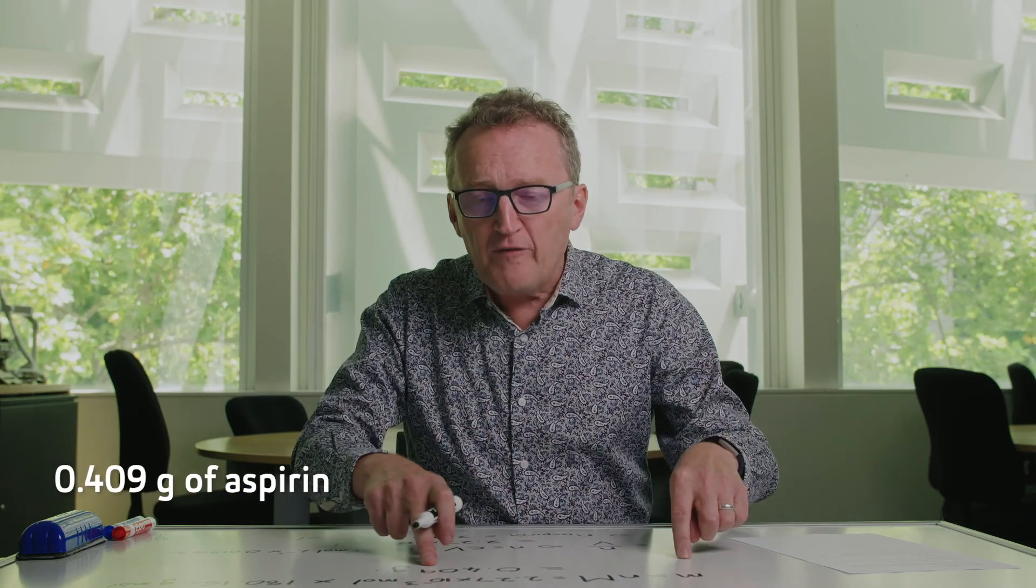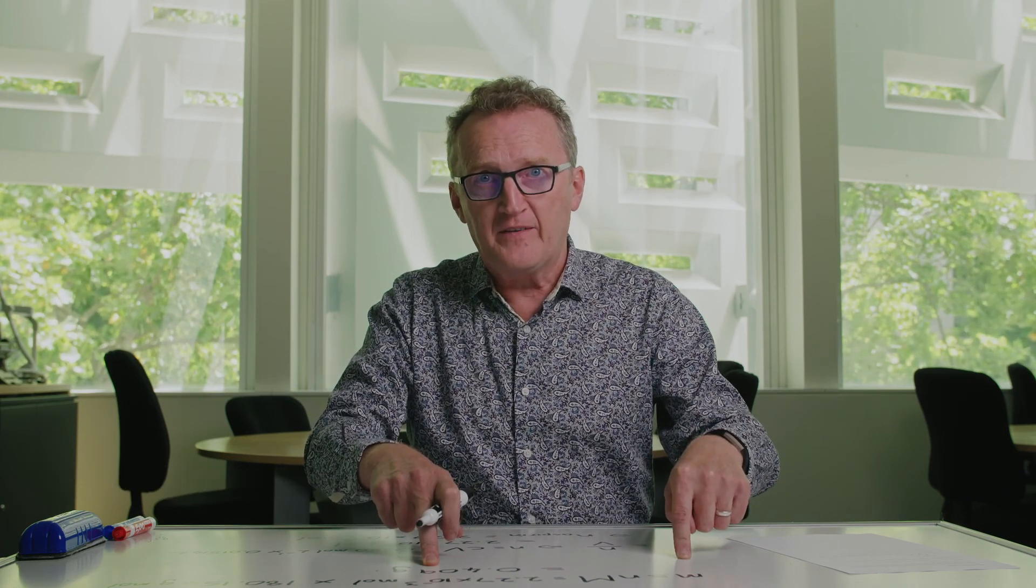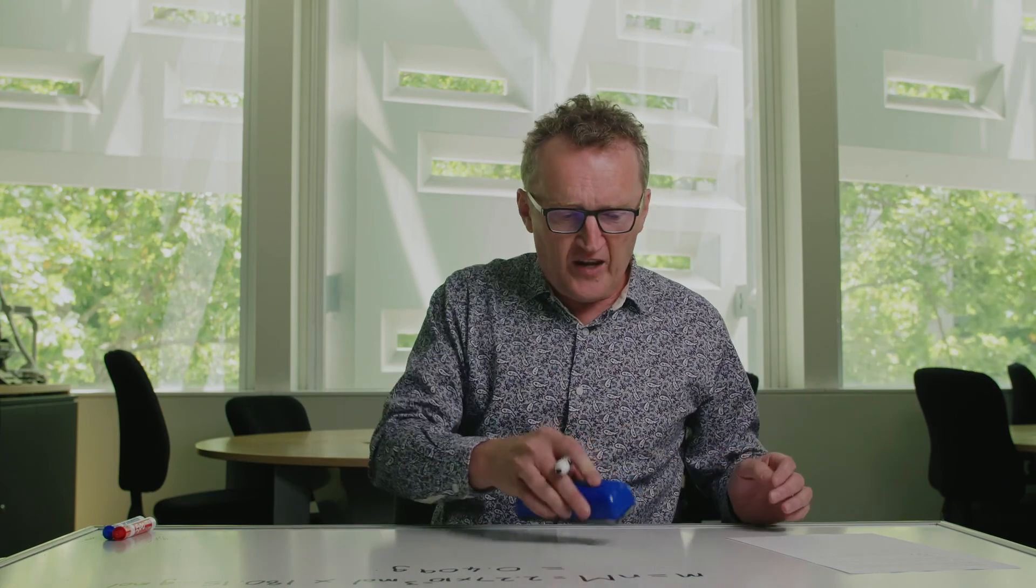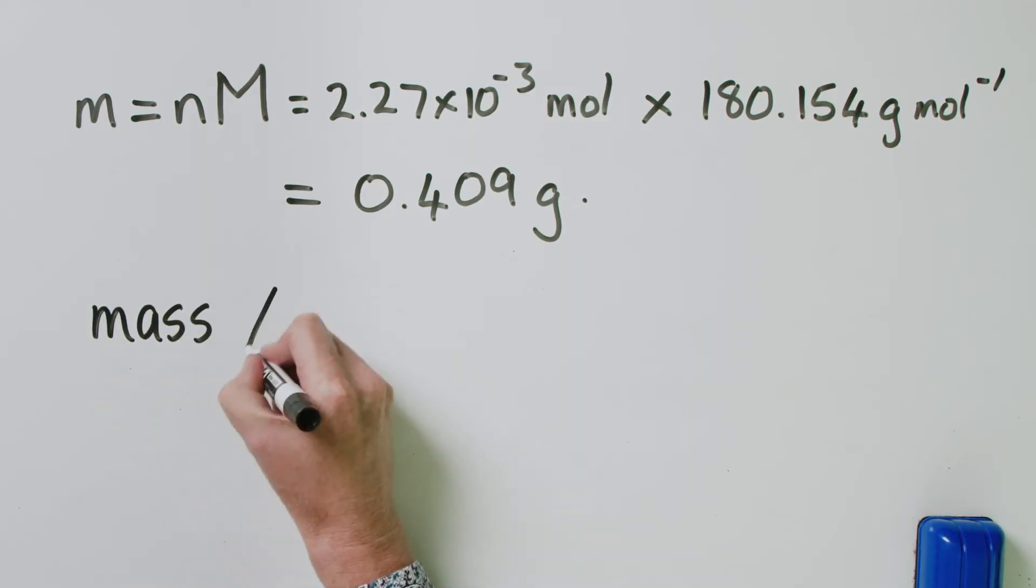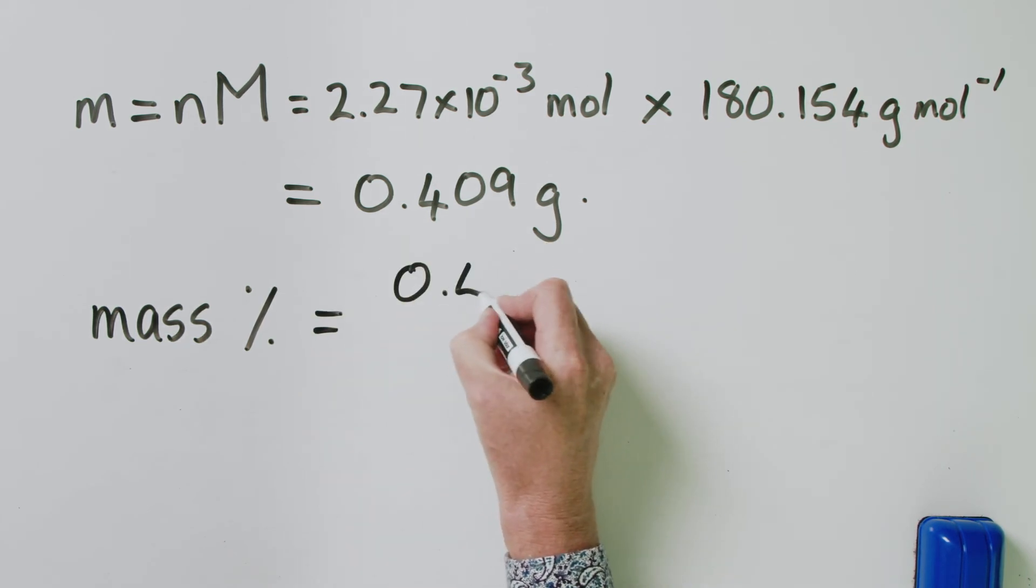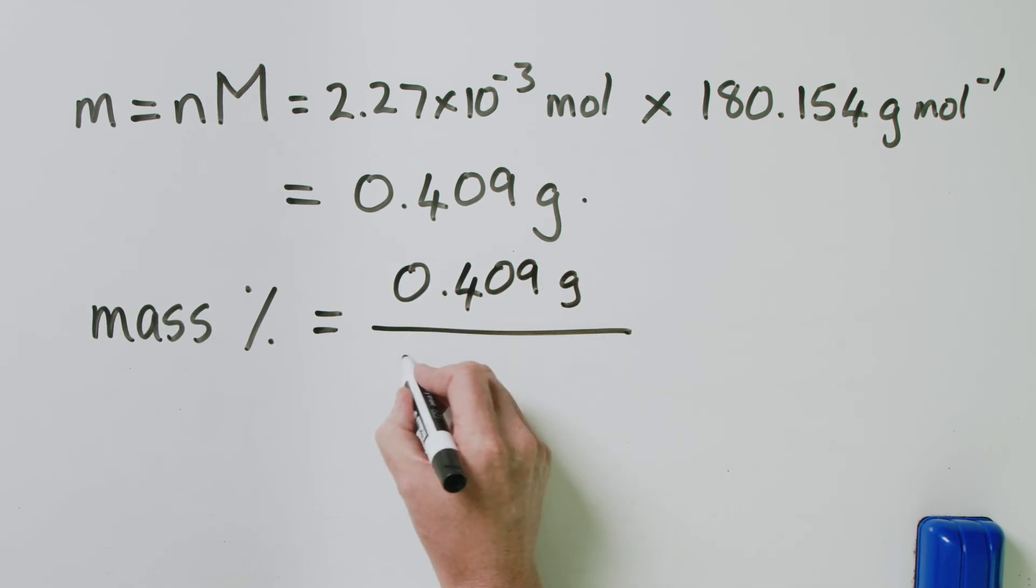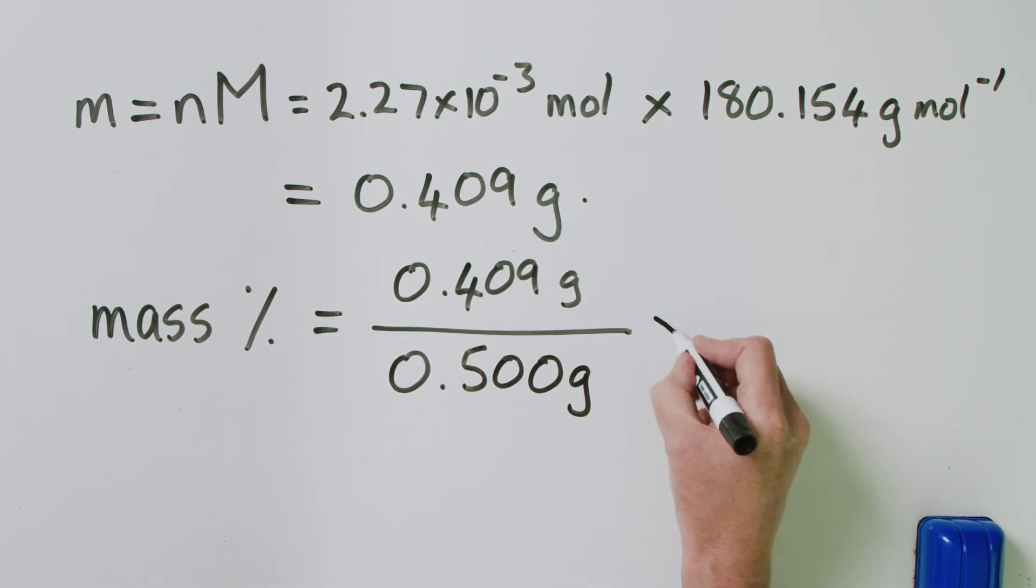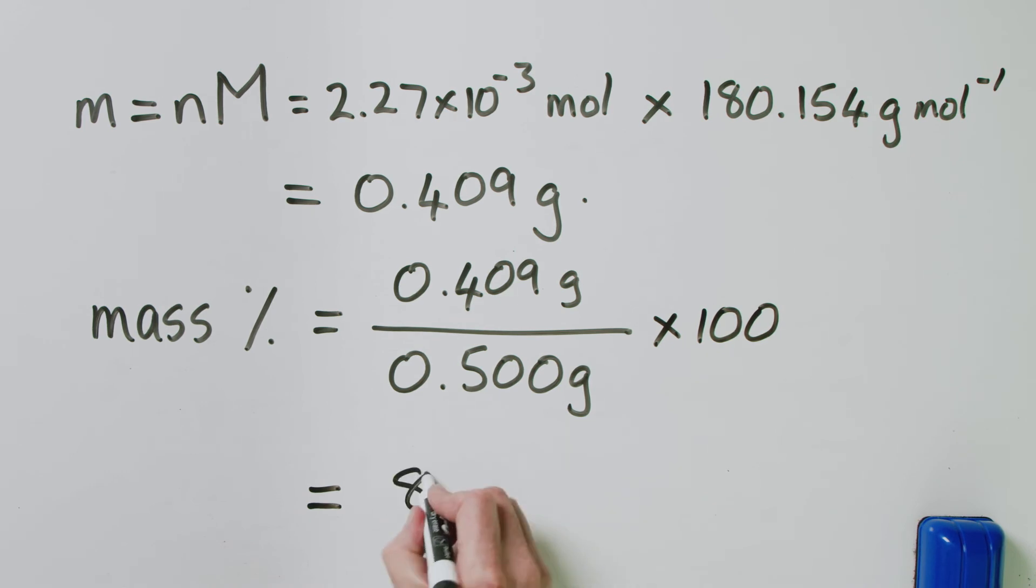So what does this answer mean? It means that in that 0.5 gram tablet of aspirin, we only had 0.409 grams of actual aspirin. The rest of the mass must have been these binders and these buffers and things like that. So the final thing that we were asked to do is calculate the mass percentage of aspirin. The mass percentage is given by the mass of aspirin, which is 0.409 grams, over the mass of the tablet, which was 0.500 grams, and we'll multiply that by 100, and if you do that, you then get 81.8%. So the tablet of aspirin that you got from the pharmacy was not in fact 100% aspirin, it was 81.8%, and that is going to be true of any aspirin that you go and buy from anywhere.